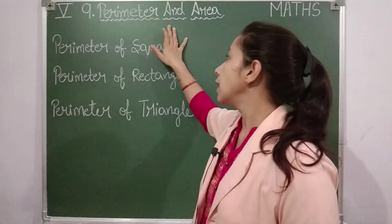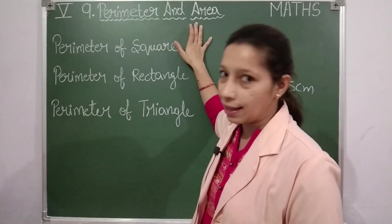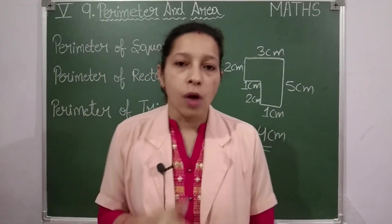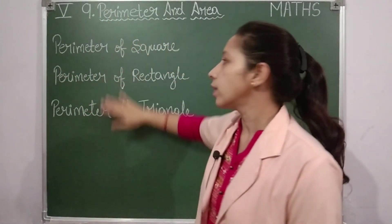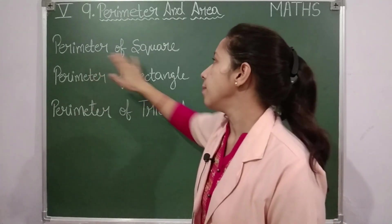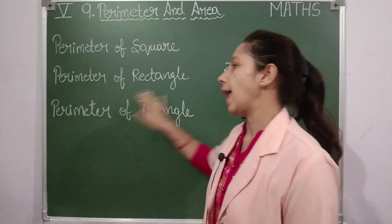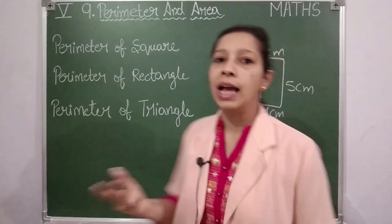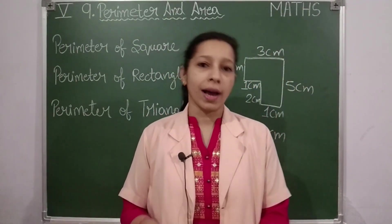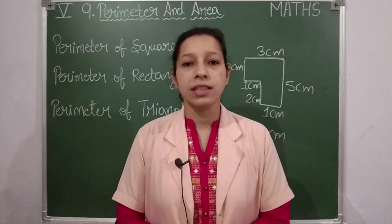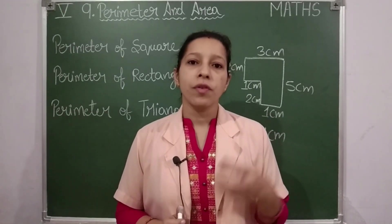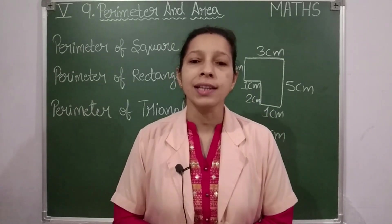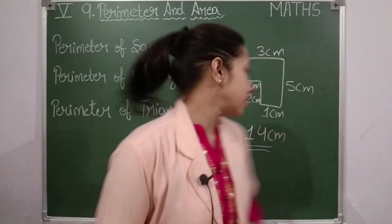In this chapter you will also study about area, but its introduction we will see later. For now in today's video we are going to cover: perimeter of square, perimeter of rectangle, and perimeter of triangle. Square, rectangle, triangle — these are geometrical shapes you already know well. First we will discuss the properties of these figures and then see how to find the perimeter.